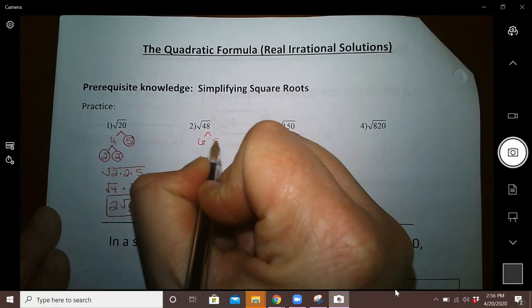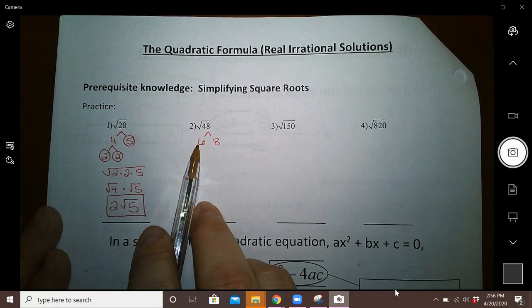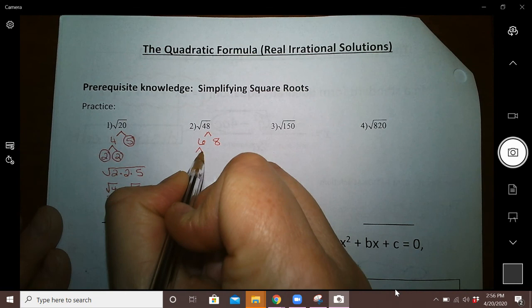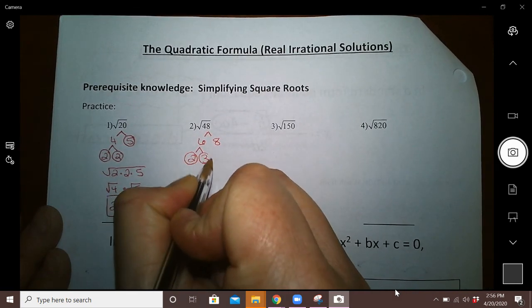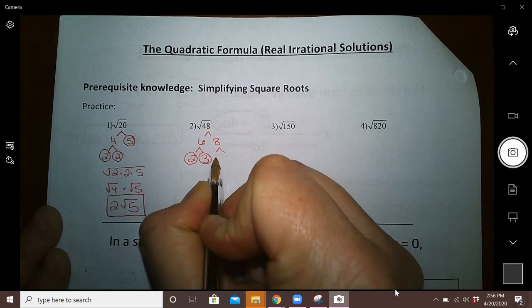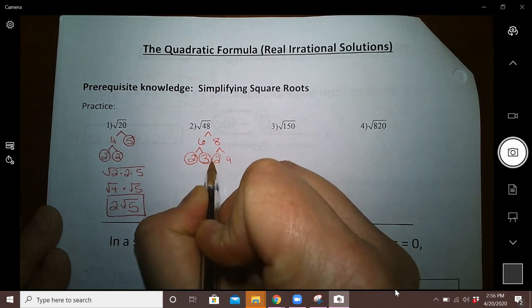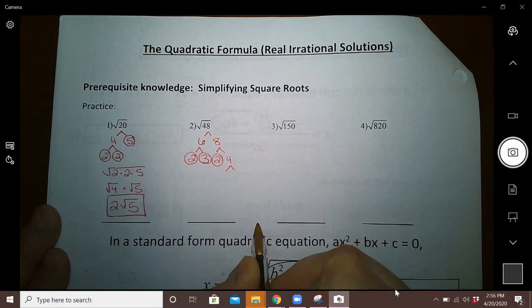6 is not prime, so I need to break that apart into 2 times 3, and now each of these are prime. 8 is not prime; that's 2 times 4. And 2 is prime, but 4 is not, so I need to do one more level.